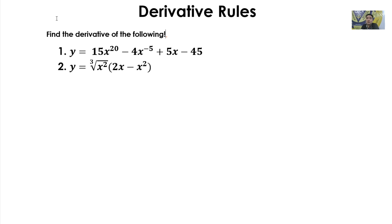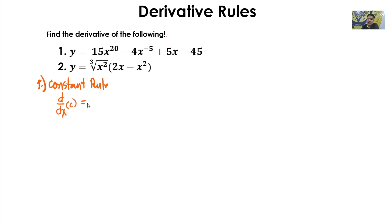The first rule is the Constant Rule. It states that the derivative of any constant number with respect to x is always equal to zero. For example, the derivative of one million or the derivative of one billion — all of those equal zero.